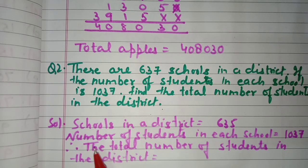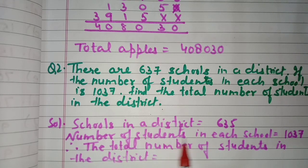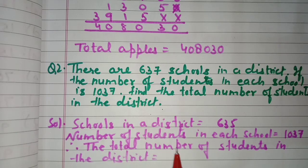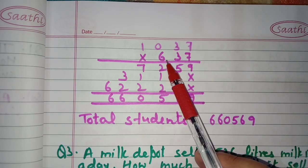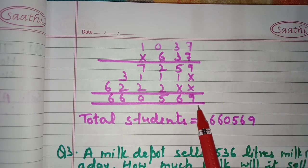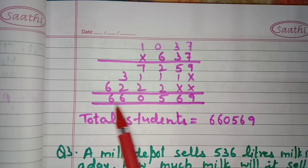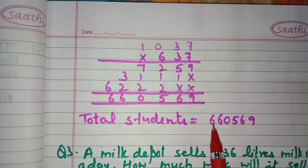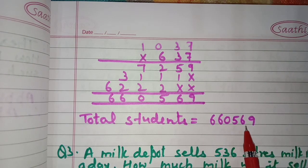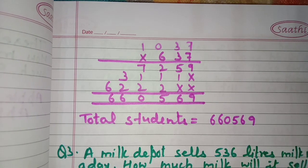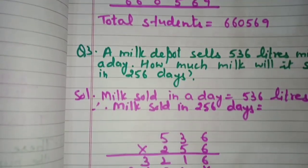Schools in the district: 637. Number of students in each school: 1037. Therefore, the total number of students in the district — we multiply 1037 by 637 and get 6,60,569. So there are 6,60,569 students in the district.